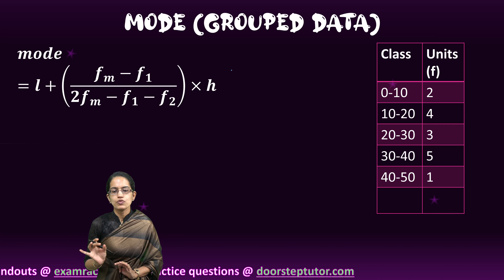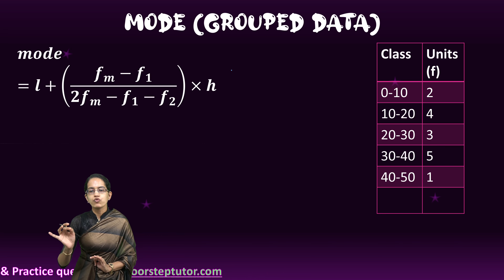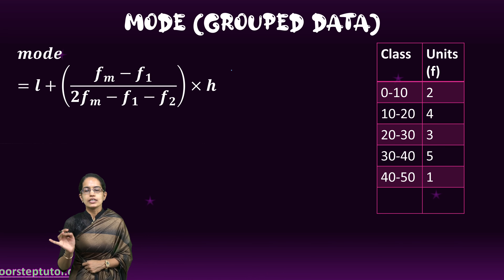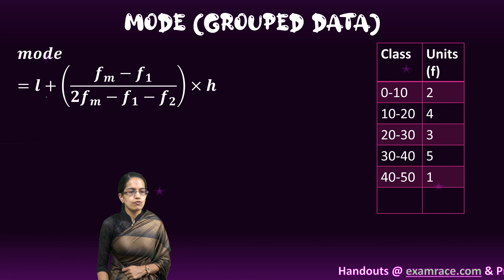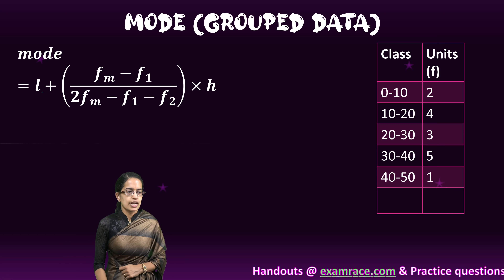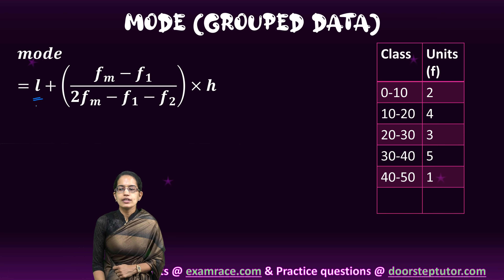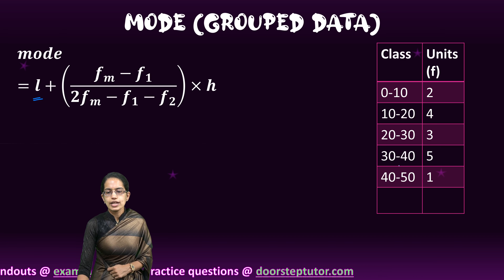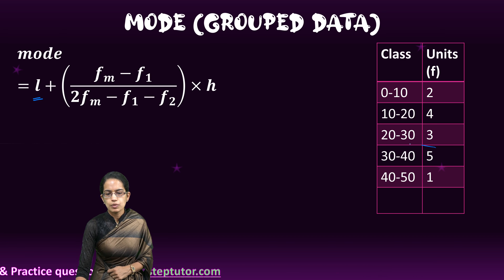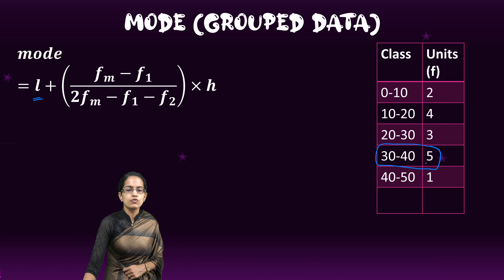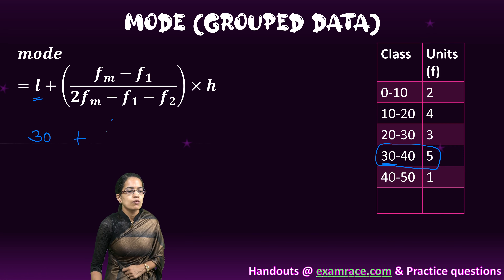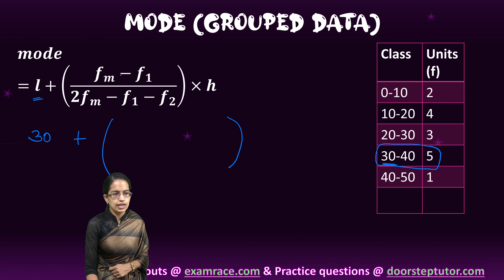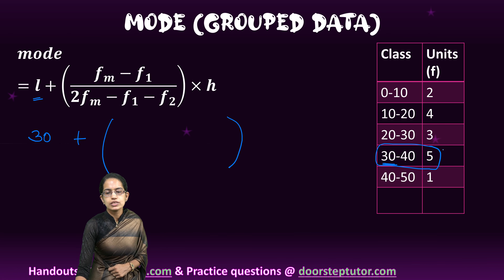Coming on to the grouped data, we need to understand mode carefully. We first find the class intervals: 0–10, 10–20, 20–30, 30–40, 40–50, and the frequencies are 2, 4, 3, 5, and 1. Now I have the formula here. L is the lower limit of the modal class. The modal class is the one with the highest frequency, which is 30–40 with frequency 5. So 30–40 becomes the modal class and 30 is its lower limit.